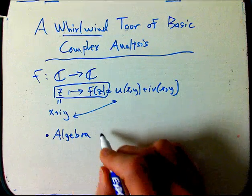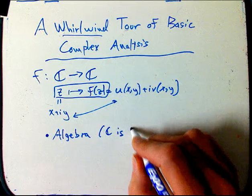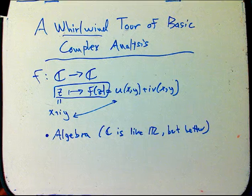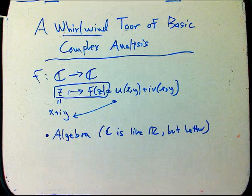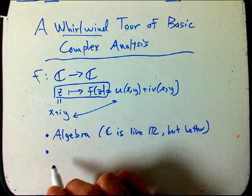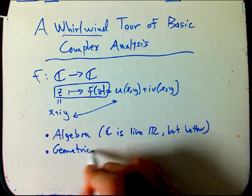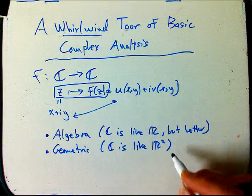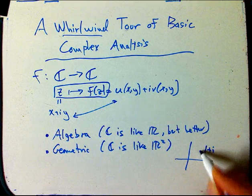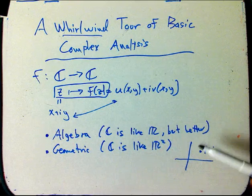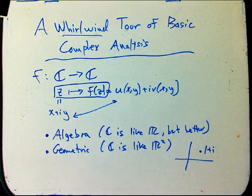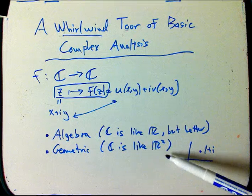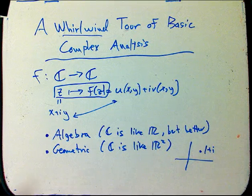There's the algebraic perspective, where C, the complex numbers, is seen as very much like the real numbers but better. To use technical language, it's a field, just like R is a field — in fact, it's an algebraically complete field. Then there's the geometric perspective, where C is like the plane but with more structure. This is the picture of the complex plane, where you take 1+i as a point in the plane.